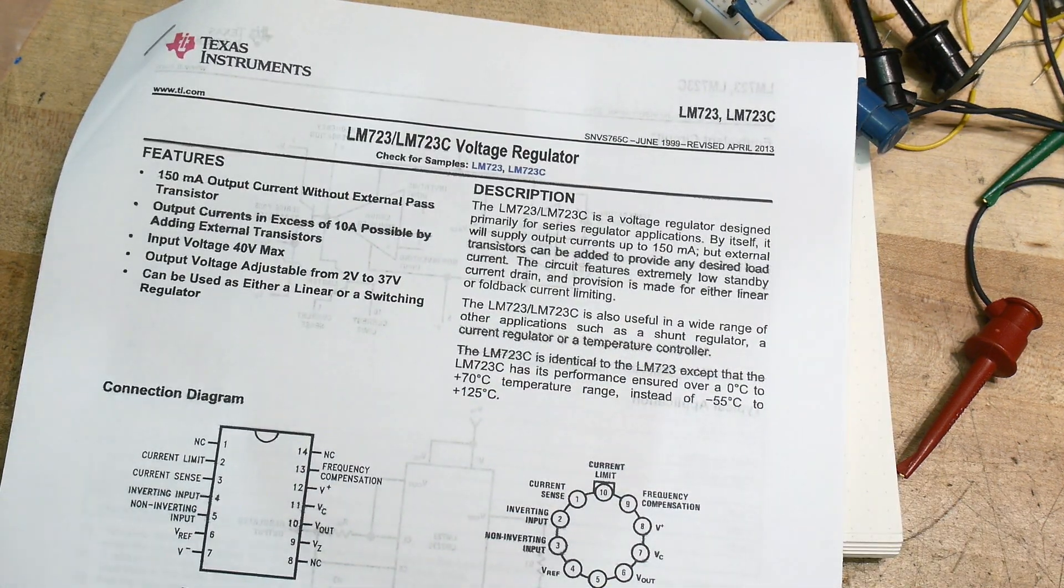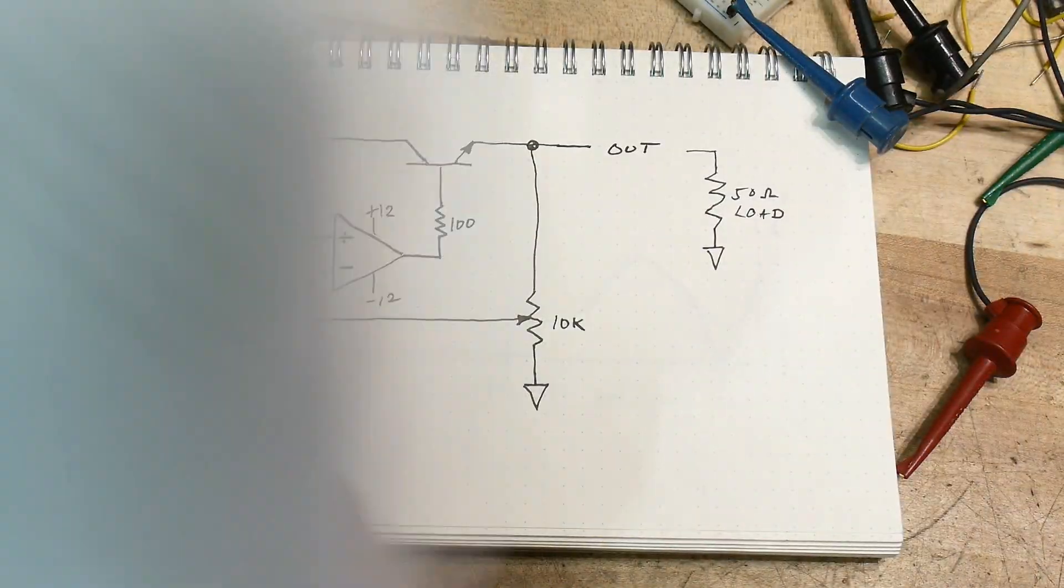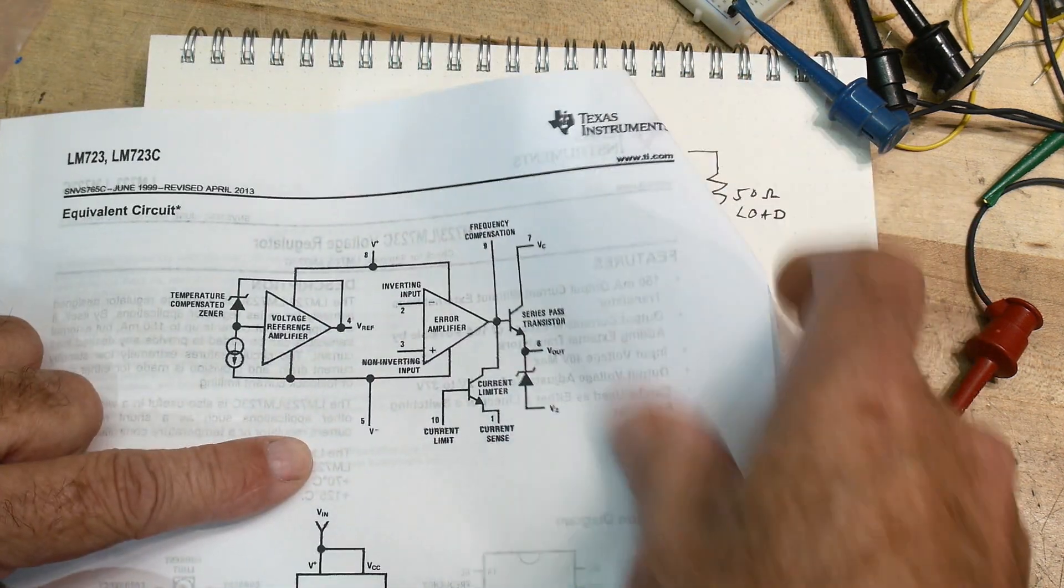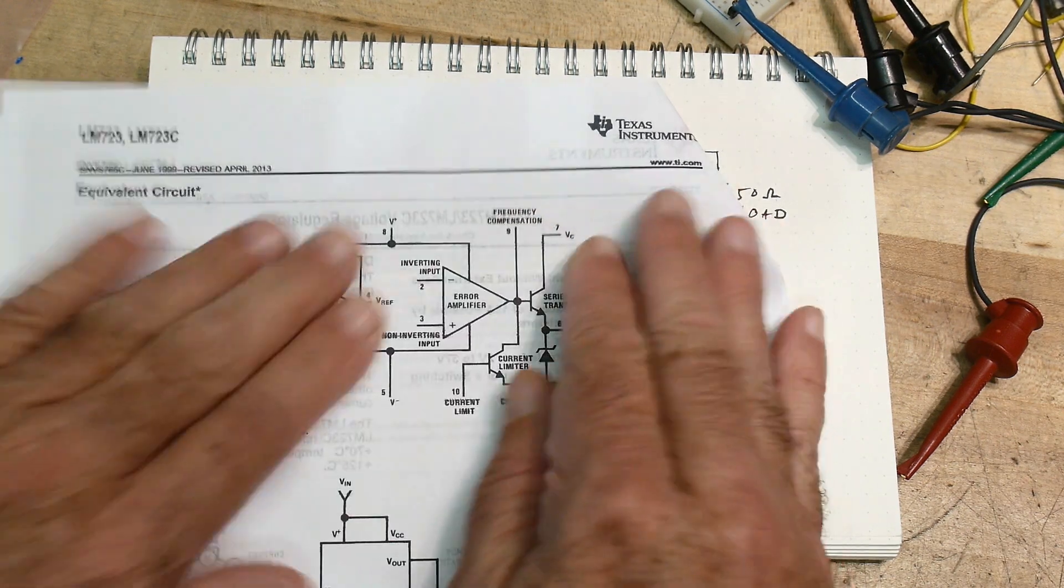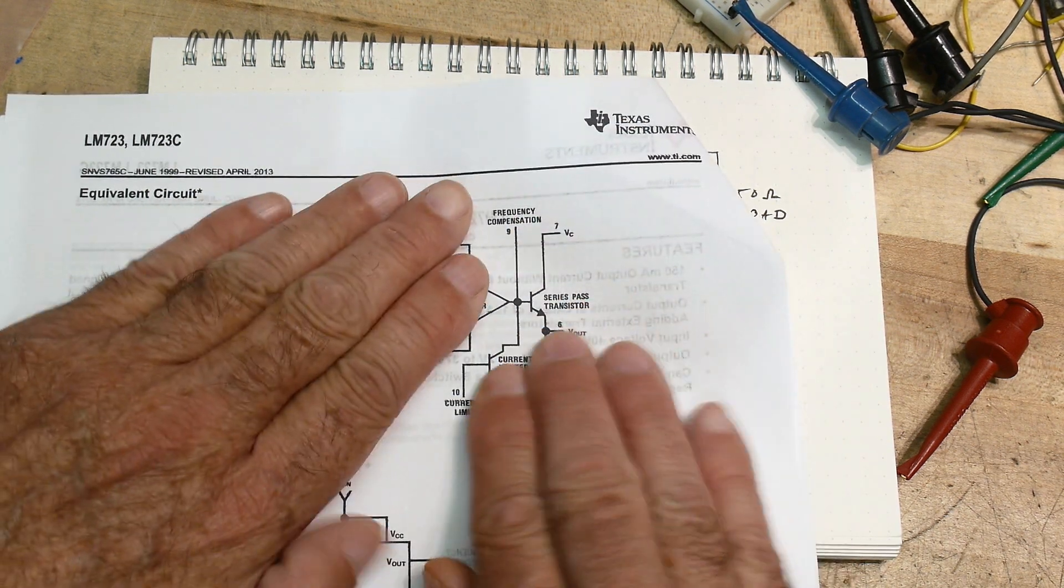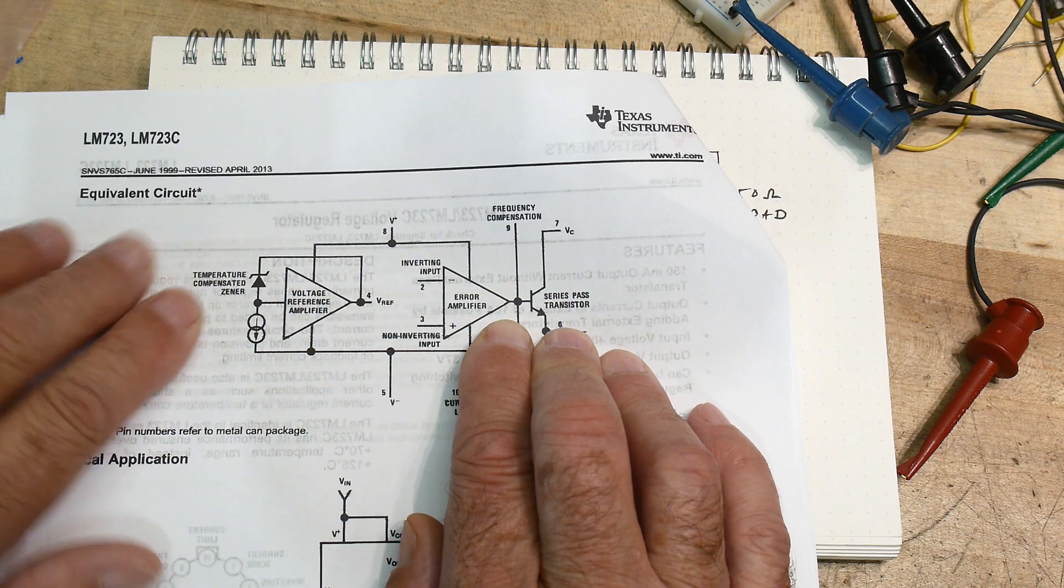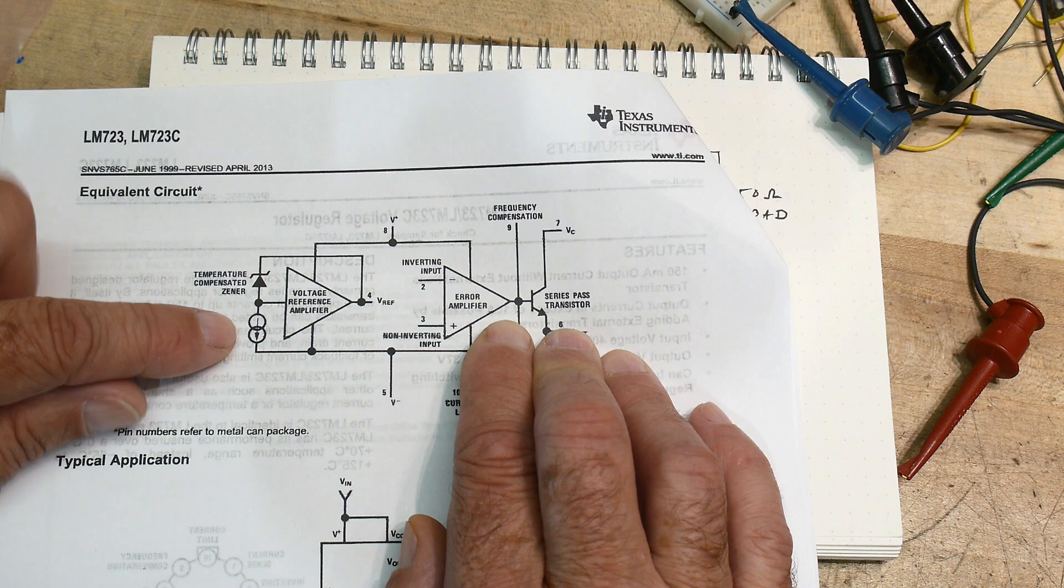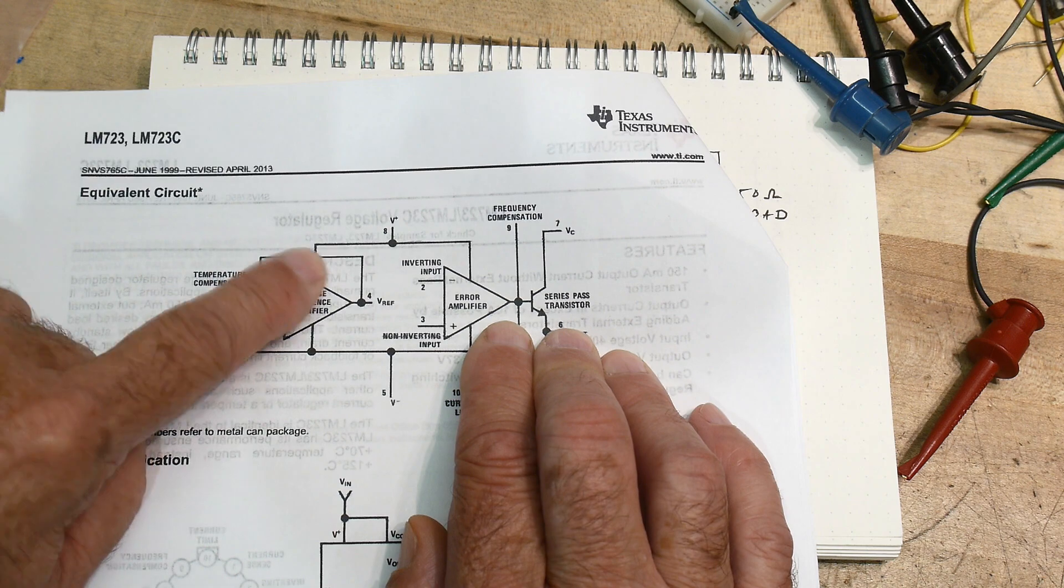This is basically what this 723 has in it. First of all it has the zener diode and it has the amplifier, the op amp, and it has the pass transistor. Okay, so they buffer the zener diode and they put a nice current source on it, so they just make it fancier.